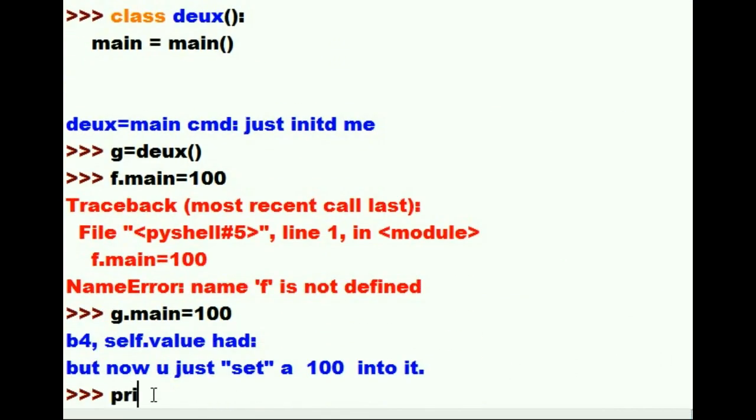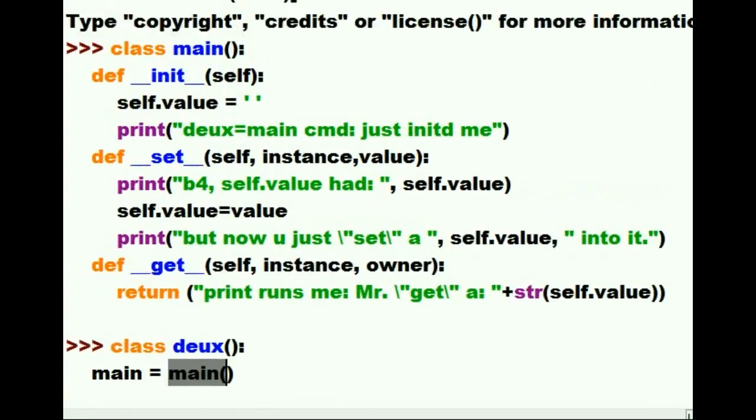I'm going to print g.main. And main, should I put open close parens here? No, because main is a what? It's a variable within class deux. So, g.main, close parens, print it out. It accesses the main class.